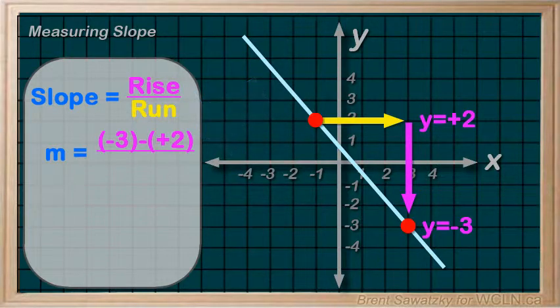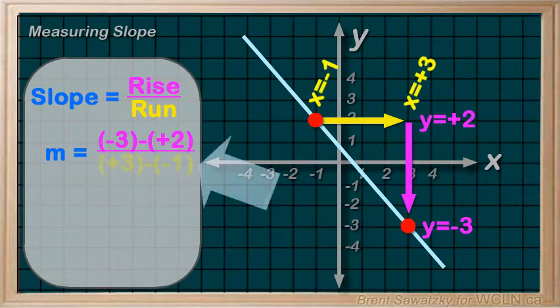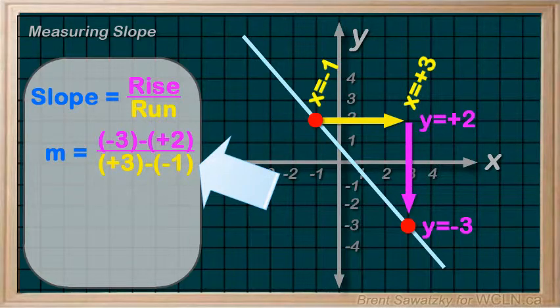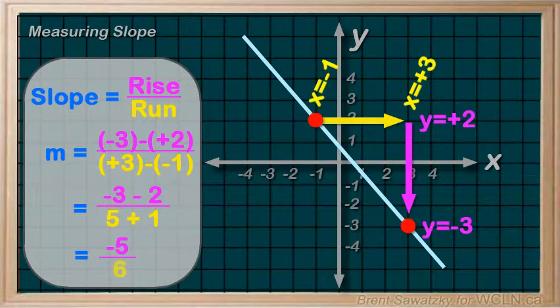For the run, we could also count our blocks or subtract the x values. Going from negative 1 to plus 3, we could determine the run as plus 3 minus negative 1. And it's time to get rid of brackets to simplify it. And we end up with a slope of negative 5 over 6. And we can't reduce this at all. So, that will be our final answer. And a negative. As expected, it drops to the right.